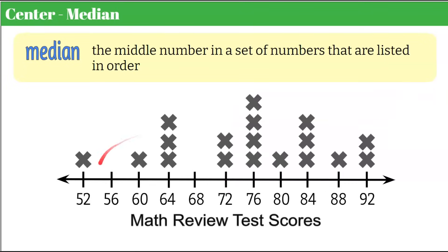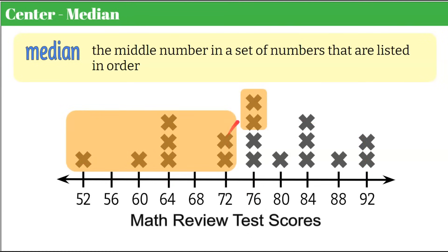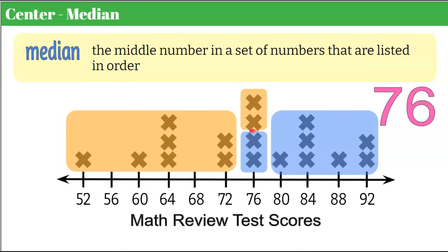If we look at a dot plot and want to find the median, we take our dots, add them up, and divide in half. We have 18 test scores total, so half of 18 is 9. Counting 9 from the left and 9 from the right, our median lands at 76. A dot plot puts data in order from least to greatest, so we can visually find our median. It's not as easy to see as in a box and whisker, but it's pretty easy to figure out.